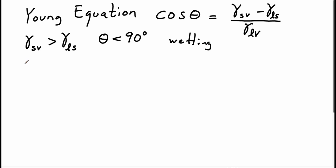On the other hand, if the solid-vapor interface is less in surface energy than the liquid-solid interface, then the cosine of theta is a negative number, which means that theta is greater than 90 degrees, and we have at least partial non-wetting.